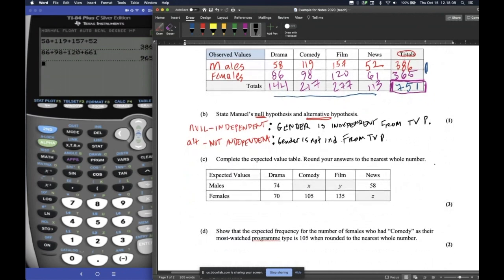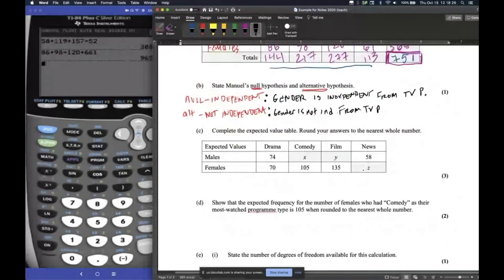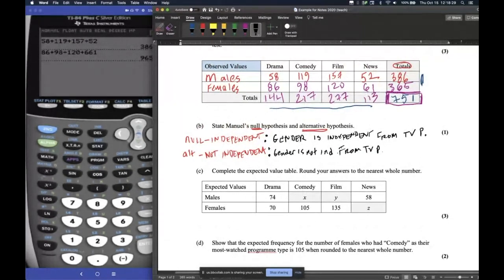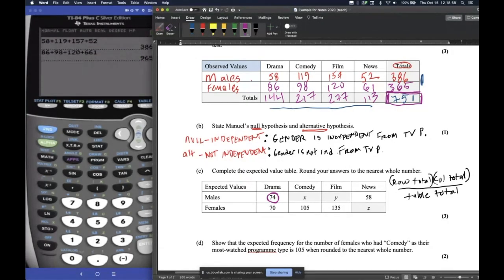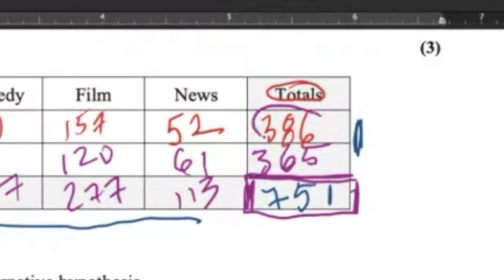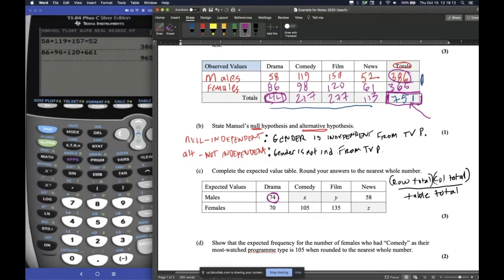After we come up with our hypothesis, the first thing we need to do is calculate expected values. What that means is if someone were to do this experiment again, on average, what would be the expected values for each of those cells, each of those columns? So here we have some values filled in already. Well, the way we get these values is we take our totals. We'll say it's the row total times column total divided by table total. So, for example, I'll look at this one first that they gave us. They gave us 74 here. So what they're saying is if I go to my row total, which would be 386 right here, multiplied by the column total, which is 144 right here, divided by the table total, I should get somewhere close to 74.